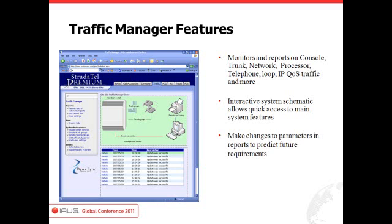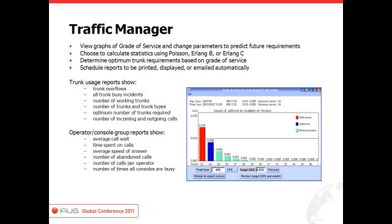The Traffic Manager — there is some traffic information in the Call Accounting piece, but this is true traffic analysis. It monitors console trunks, network, and processor. The interactive schematic, which is the GUI interface, allows you to get where you need to be quickly. You can make changes to parameters and reports — it's kind of a what-if scenario where you can see what's going to happen with your trunking information and plan for future events.